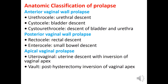Classification of prolapse. We have anterior vaginal wall prolapse, posterior vaginal wall prolapse, and apical vaginal prolapse. Anterior vaginal wall prolapse includes urethrocele (urethral descent), cystocele (bladder descent), and cystourethrocele (descent of both bladder and urethra).